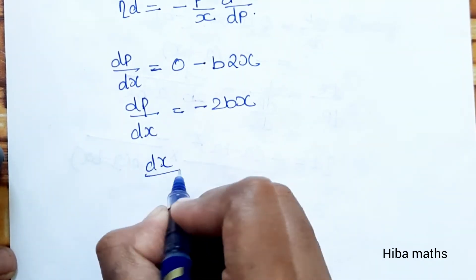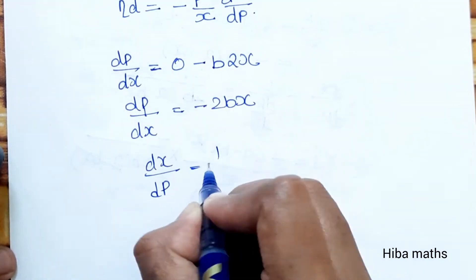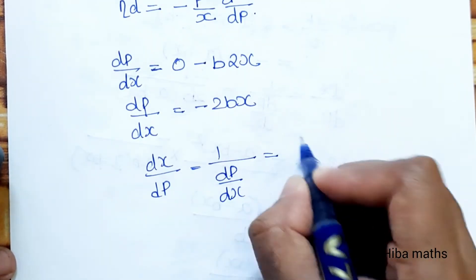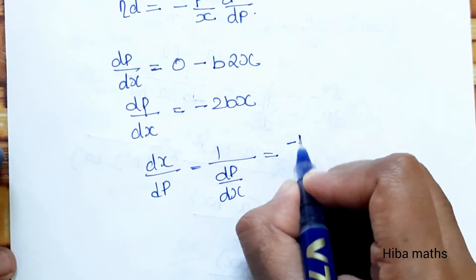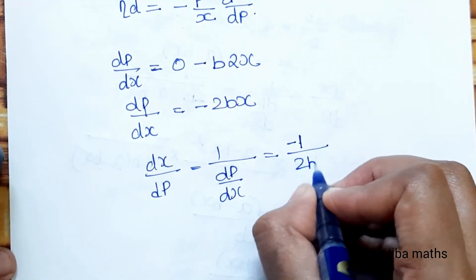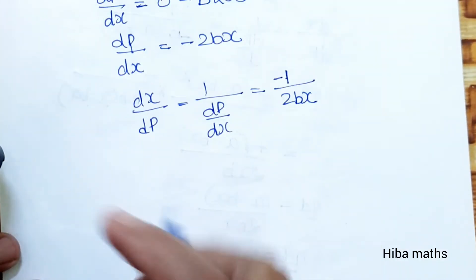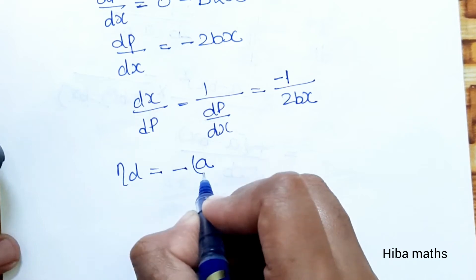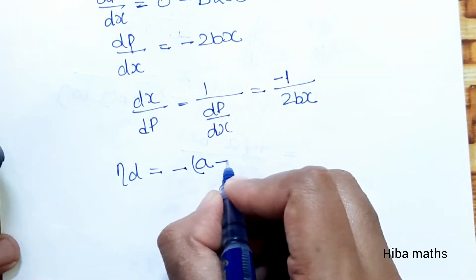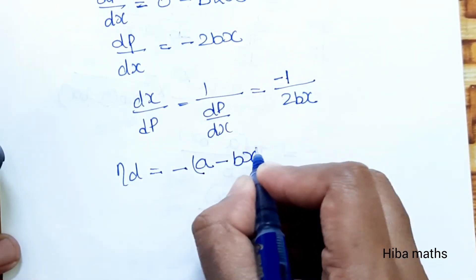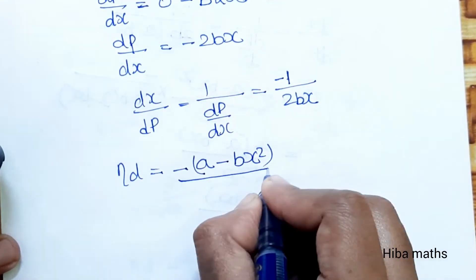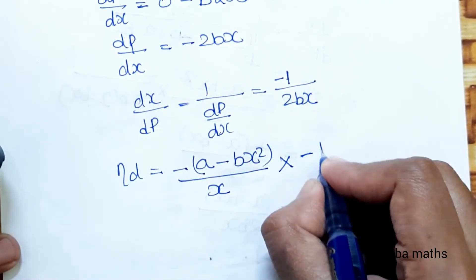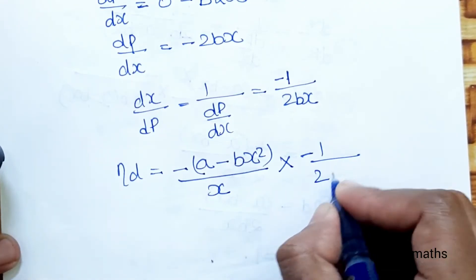So dx by dp equals 1 divided by dp by dx, which equals minus 1 by 2bx. Substituting into eta_d: minus p value (a minus bx squared) divided by x, into minus 1 by 2bx.